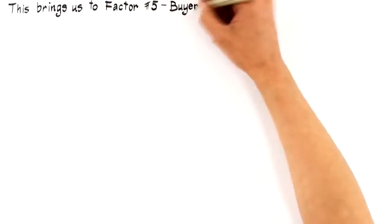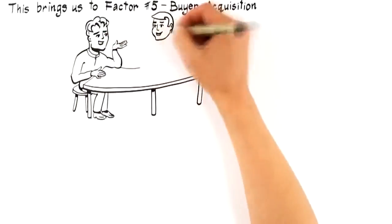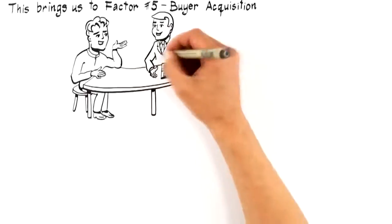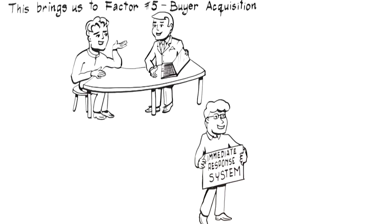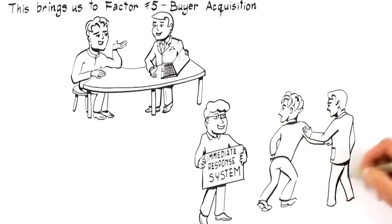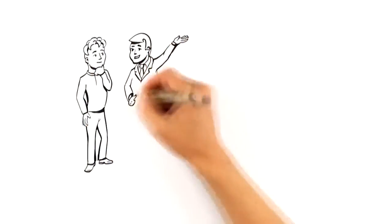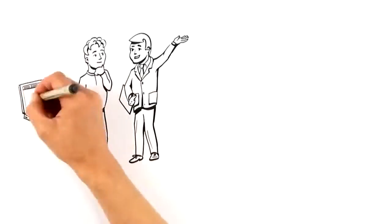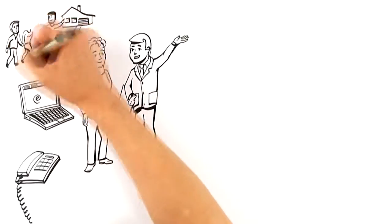This brings us to factor number five: buyer acquisition. With your home differentiated to attract top dollar offers, a strong marketing budget in place to expose your home to targeted buyers, and an aggressive plan to motivate cooperating agents to bring you their best clients, hiring a professional who has developed an immediate response system is critical to acquiring a buyer for your home. Think of this like the circuit breaker in your house. Emails, calls, and showings are like electricity for the sale of your home. So, without a system to process and qualify their flow, you risk shorting out a top dollar offer.